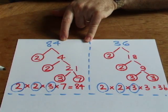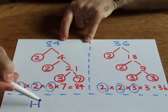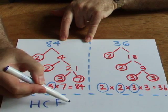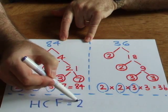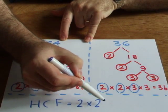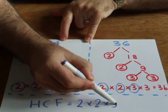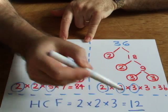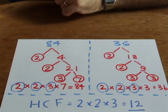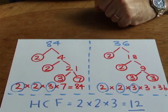So these are the primes that are in common. And simply, the highest common factor is just those primes multiplied together. So 2 times 2 times 3 gives me 12. And that then is the highest common factor of 84 and 36.